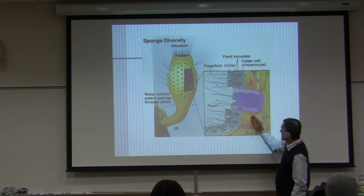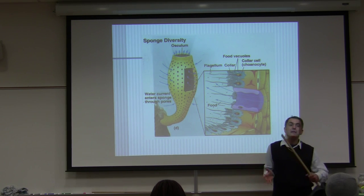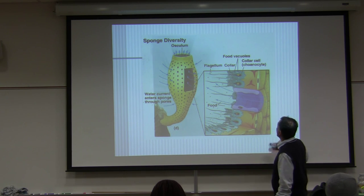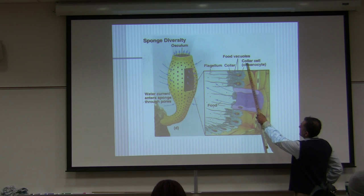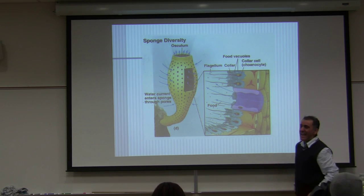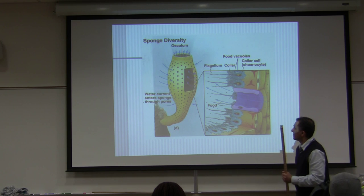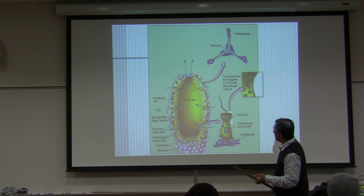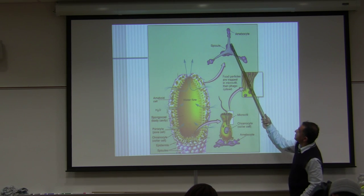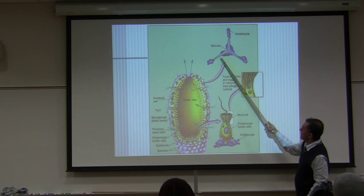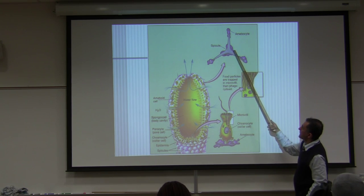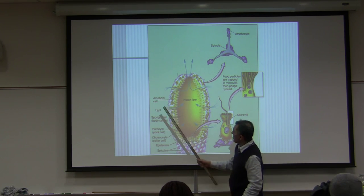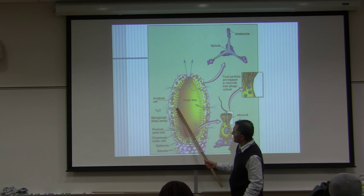Another name for choanocytes is collar cells — C-O-L-L-A-R cells. Here are the spicules — they look like a star. Amoebocytes make up the spicules. The water comes in through the opening and enters the spongocoel — 'coel' on your prefix and suffix means space. So spongocoel is the sponge space.